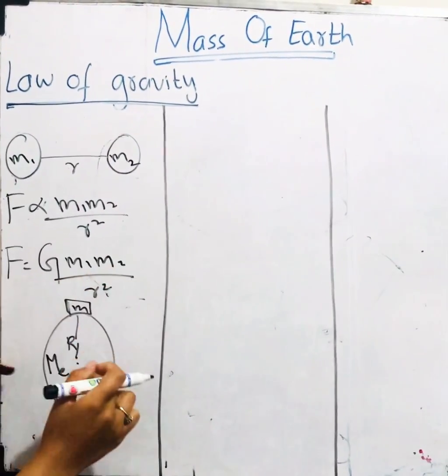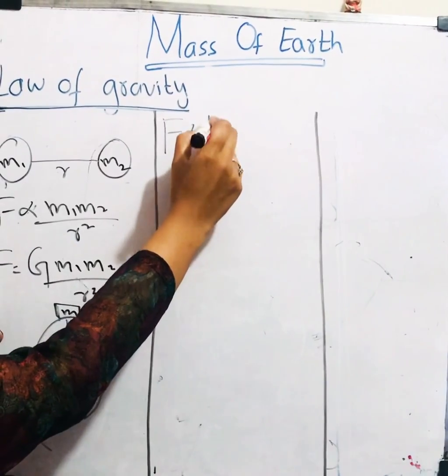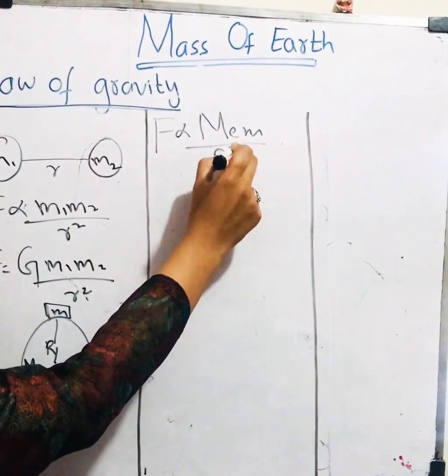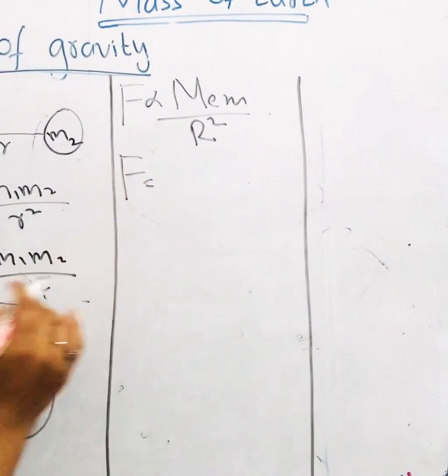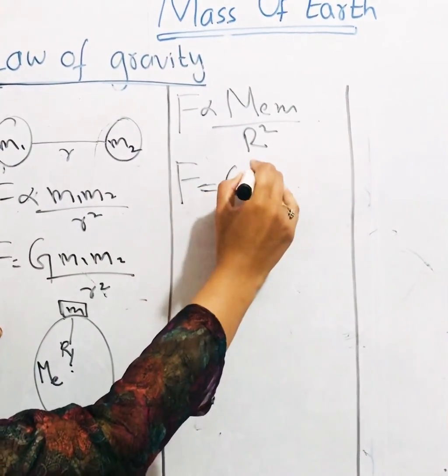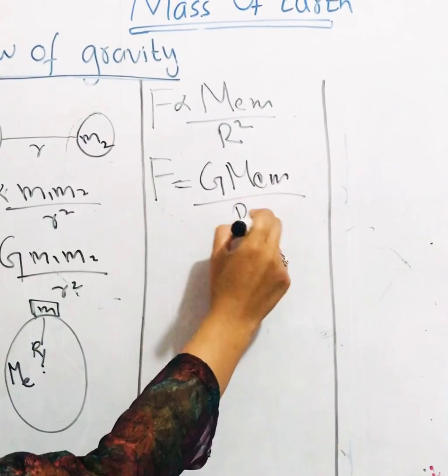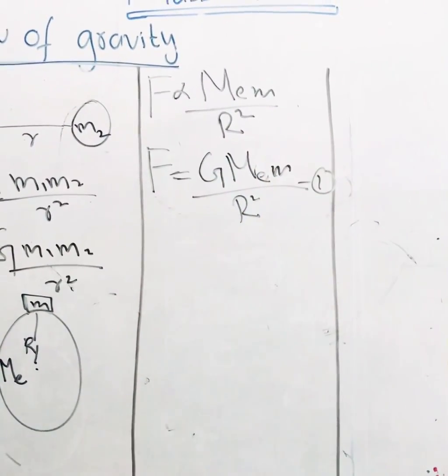Let's apply this law here. Force is directly proportional to product of masses and inversely proportional to square of distance between objects. Again, I have to replace proportionality with constant, capital G. This is equation 1.